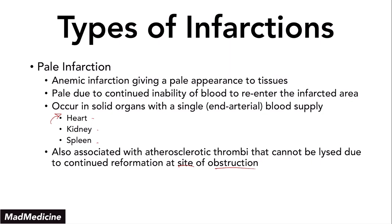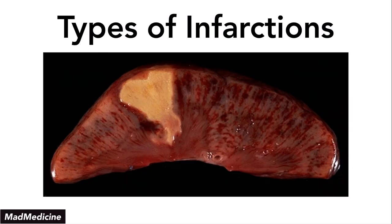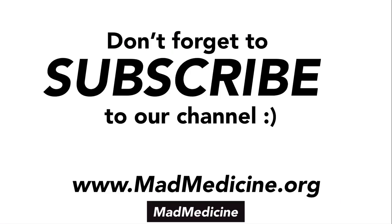And this is what a pale infarction looks like. This is a picture of a kidney, and as you can see, this tissue is clearly paler than the surrounding tissue right here. This is what a pale infarction looks like. I hope this was helpful and educational.